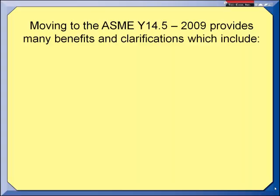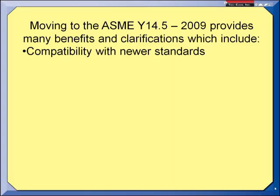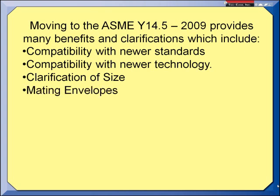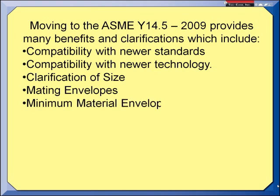By moving to the 2009 revision, many benefits and clarifications can be realized. There's compatibility with the standards that have been released since the 1994 standard was printed, and the new revision reflects many of the changes we have seen in coordinate measuring machine and vision system software. There's clarification of size depending on function and application — many types of size from local size to the size of the actual mating envelope. Mating envelopes have been expanded, making it easier to understand whether you want a related or unrelated envelope when establishing a datum or controlling the center axis or center plane of a feature. The same is true for minimum material envelopes where least material condition is applied.